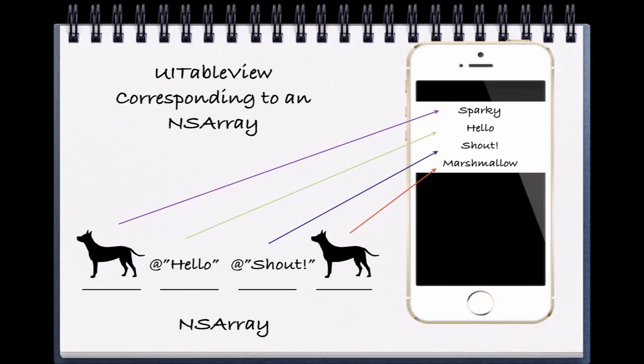Here in this example, we're adding dog names like Sparky and Marshmallow, as well as string names like Hello and Shout.